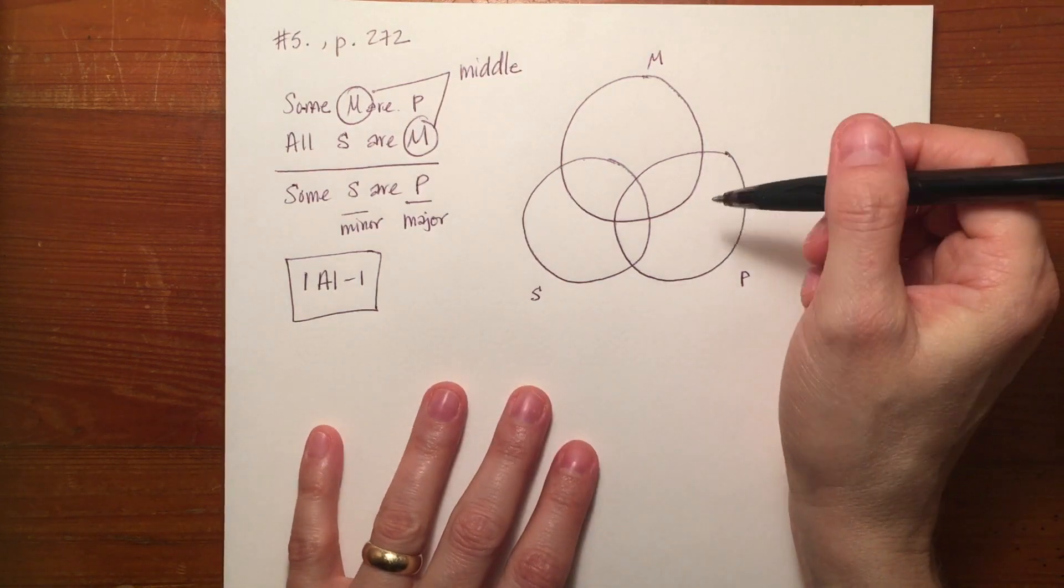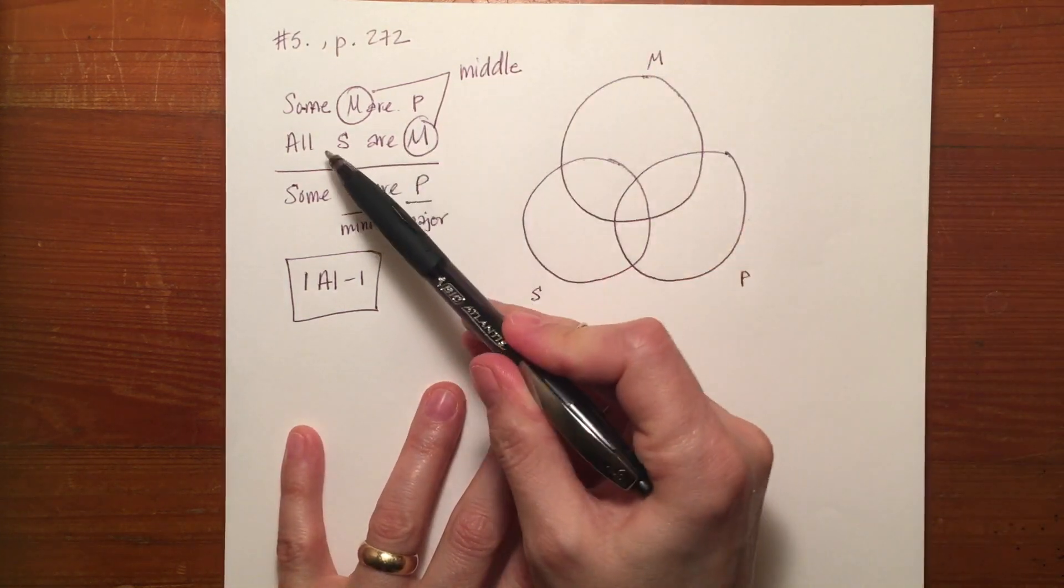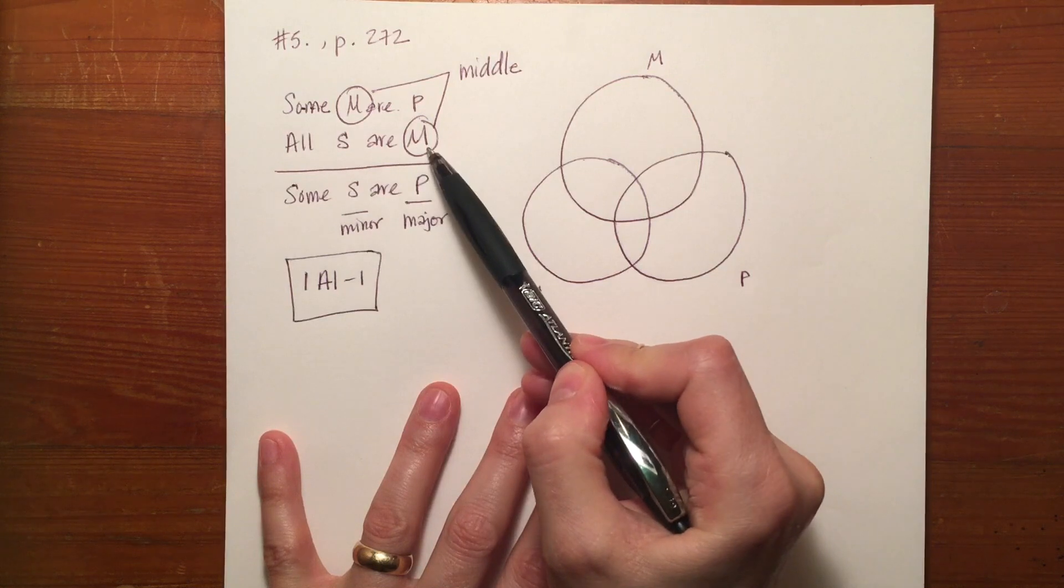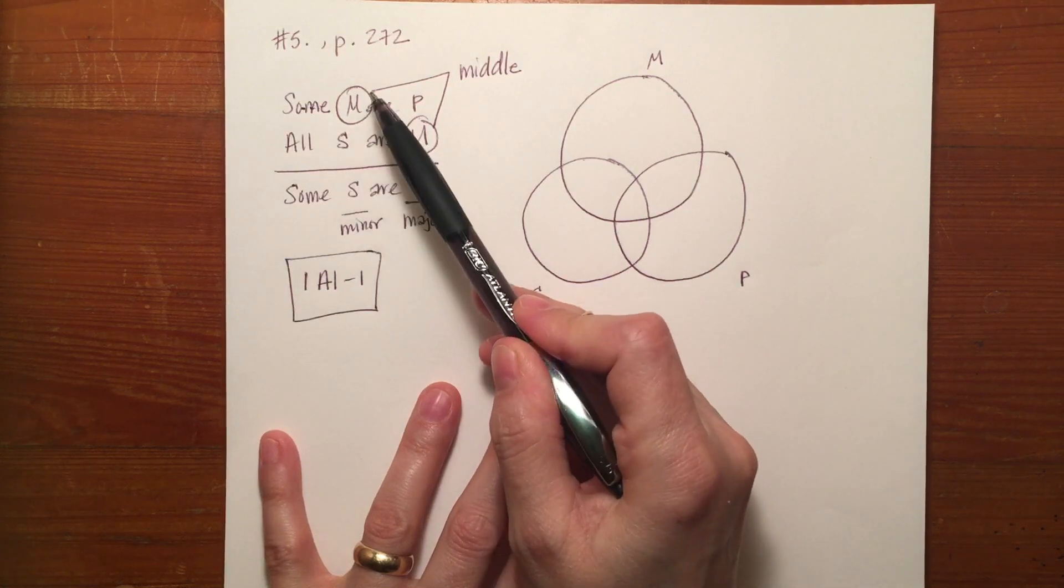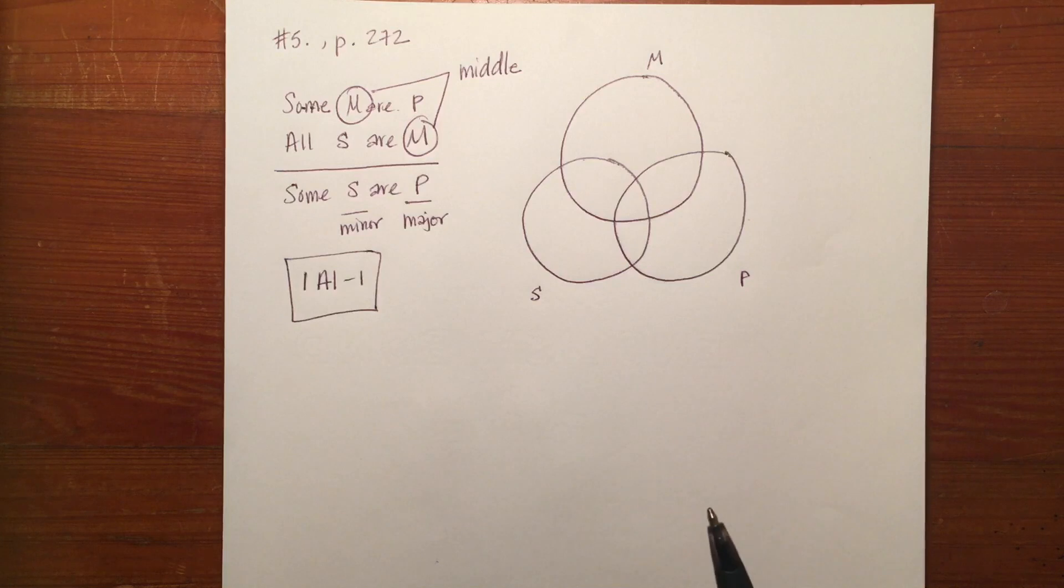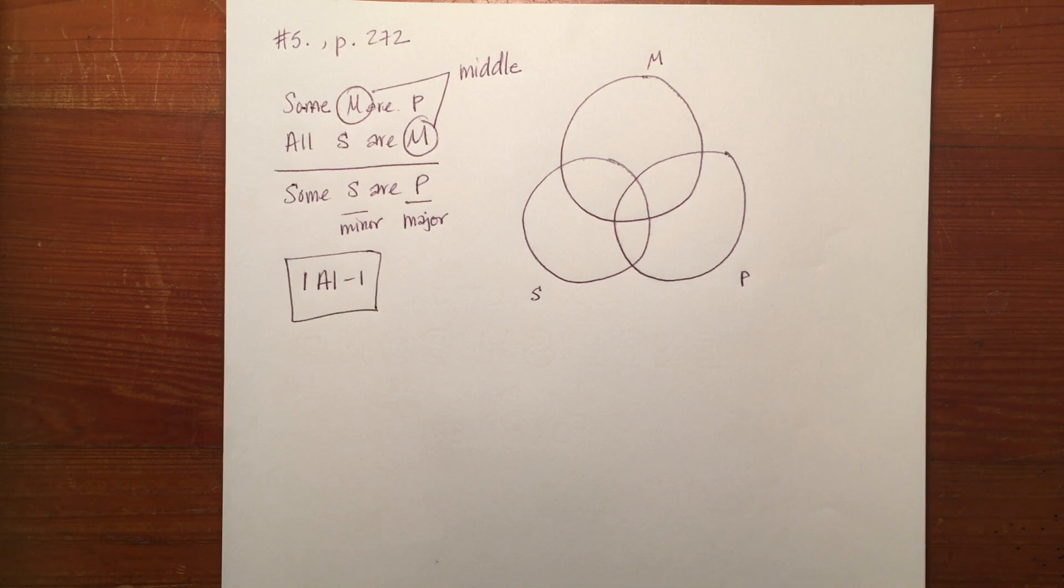One of the rules if you'll remember for Venn diagrams is that you enter in the universal premise first if you've got a universal and a particular statement. If you've got two universal premises then you could enter in either one first and it wouldn't matter. And if you had two particular statements it wouldn't matter which one you entered in first. But when you've got a universal statement and a particular statement you've got to enter in the universal one first because you have to do shading before you know where to put the x's.